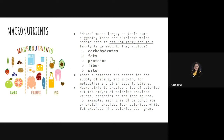Now let's go through the different macronutrients. Macro means large, so these should be consumed in fairly large amounts every day. They include carbohydrates, fats or lipids, proteins, fiber, and water. These five should be consumed in the diet in large amounts. They are needed for supply of energy and growth, for metabolism, and other bodily functions. Macronutrients provide a lot of calories, but the amount varies depending on the food source.